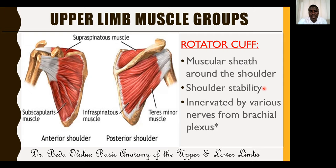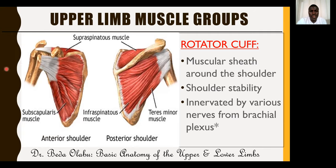The rotator cuff muscles are supplied by different nerves and perform different actions: some cause abduction, some medial rotation, some lateral rotation. We call them rotator cuff not because they rotate, but because they surround the head of the humerus. There is also the deltoid muscle, which superficially covers the shoulder region and is commonly used for intramuscular injection because it is bulky and the shoulder region is easily accessible.